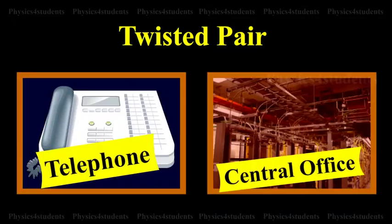Twisted pair is used between telephones and the central office. It is difficult to use when many signals must be brought from one place to another.